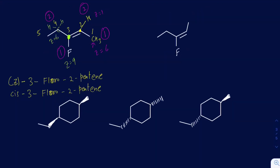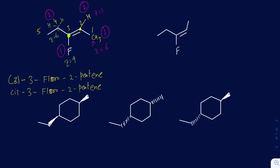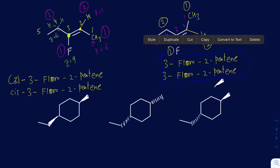Looking at the second example, it's similar to the first, but the methyl group is now pointed up and the hydrogen is pointed down. So the methyl still gets priority 1 and hydrogen gets 2. On the other side, fluorine gets 1 and the ethyl group gets 2. The numbering is still 1, 2, 3, 4, 5. Now you can see the priority-1 groups are on opposite sides, and the priority-2 groups are on opposite sides — so that's actually trans, or E. The name is E-3-fluoro-2-pentene, or you can call it trans-3-fluoro-2-pentene.